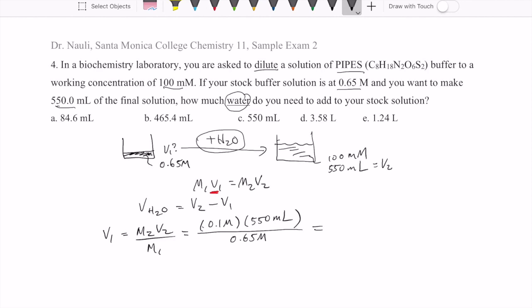And so when we work this out, this ends up being 84.61 milliliters. So that's our V1.